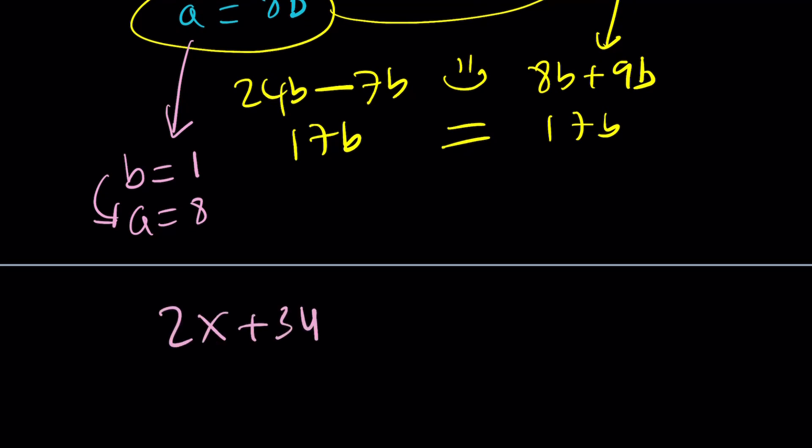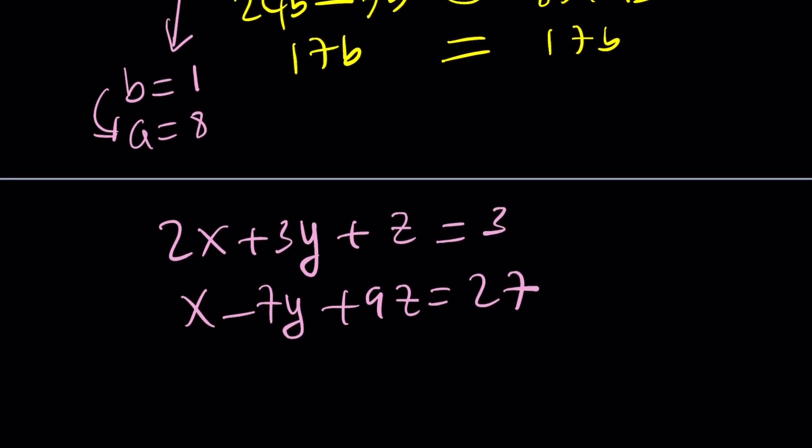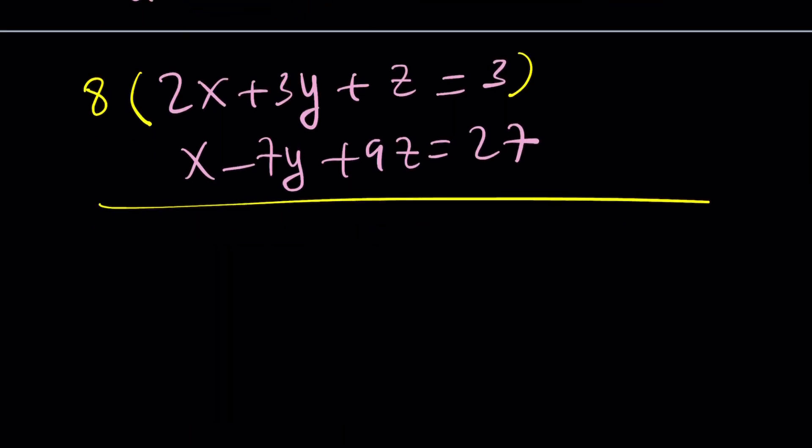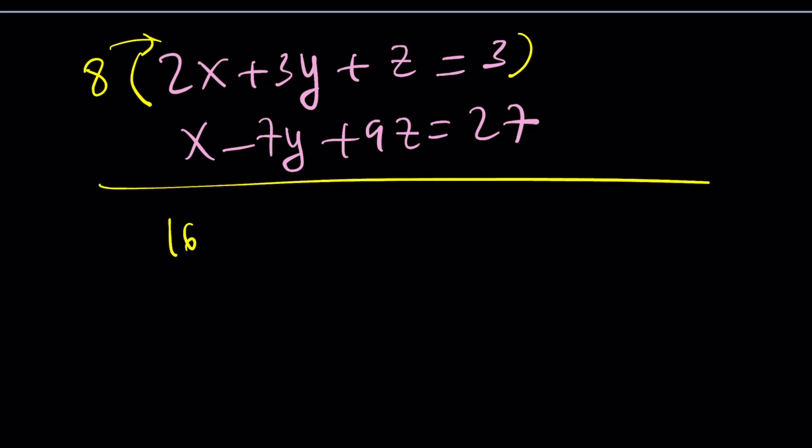So let's go ahead and multiply our equations. So remember, our system was 2x plus 3y plus z equals 3 and x minus 7y plus 9z equals 27. Now, we're saying that a is equal to 8. So we're going to multiply the top equation by 8. And the bottom one is going to be multiplied by 1 or just leave it alone, right?